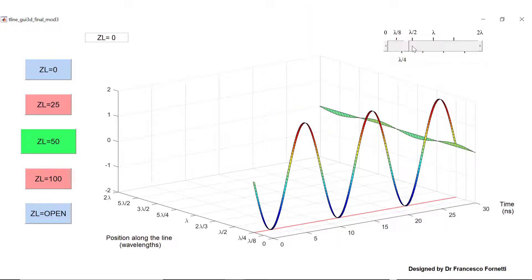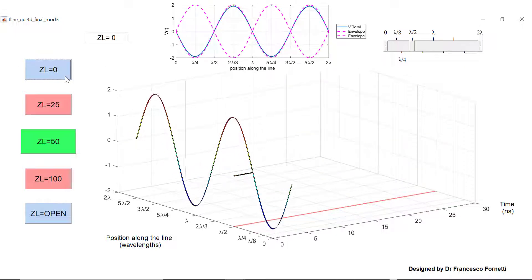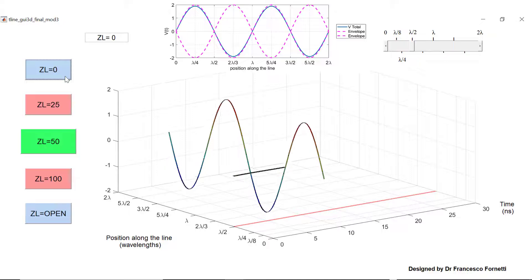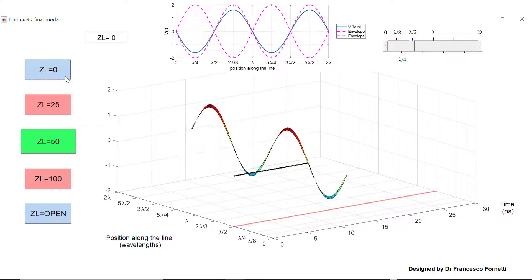Once we travel a bit further down the line, half a wavelength away from our original zero coordinate, we can see that we are now at a point again where the amplitude of the voltage is zero.